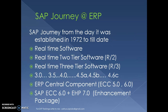SAP's journey in ERP goes back to 1972. They launched many software versions — real-time, two-tier, three-tier software — and the three-tier was very successful with versions like 3.0, 3.5, 4.5A, 4.5B, 4.5C, and so on. The last version in R3 was 4.6C, which was very popular. SAP then moved to a new name called ECC — ERP Central Component — with versions 5.0 and 6.0. From 6.0, SAP launched enhancement packages which, when installed, enabled new features in the system.